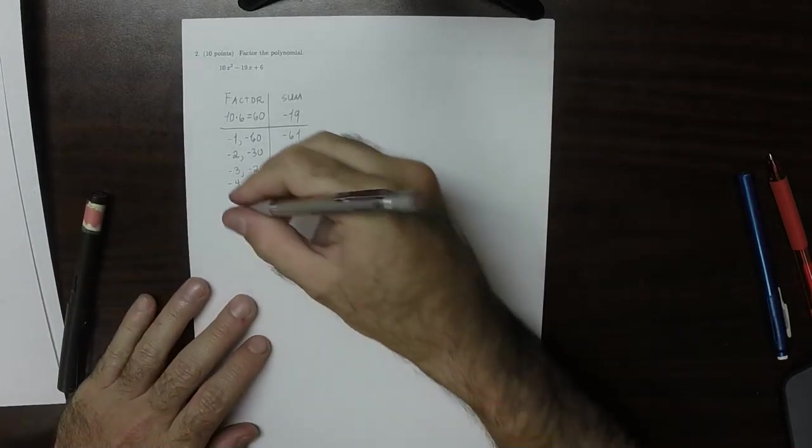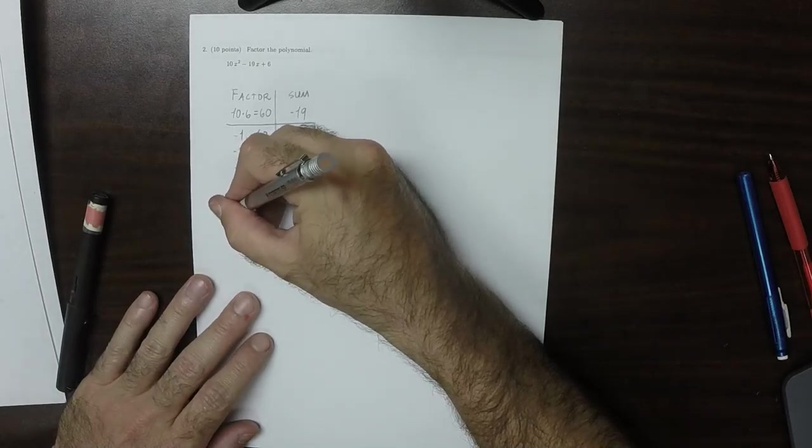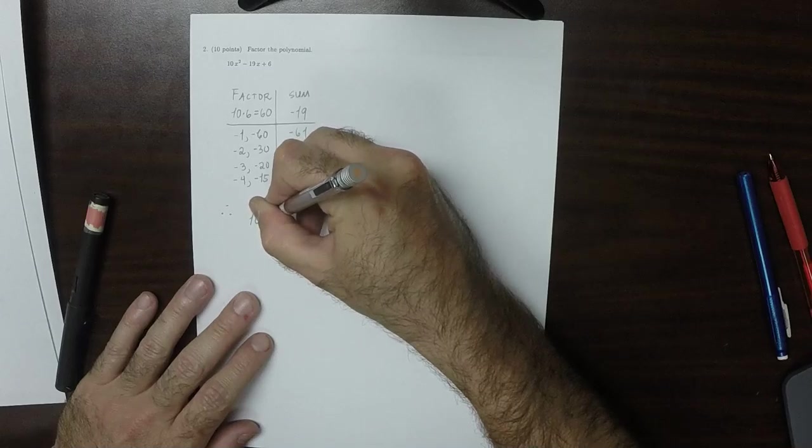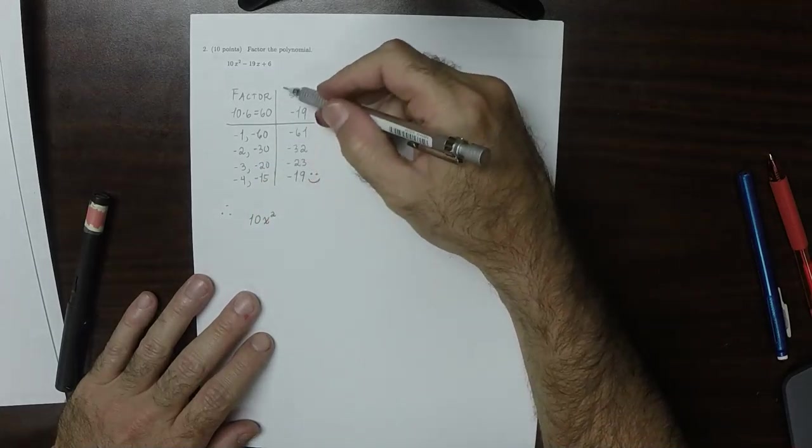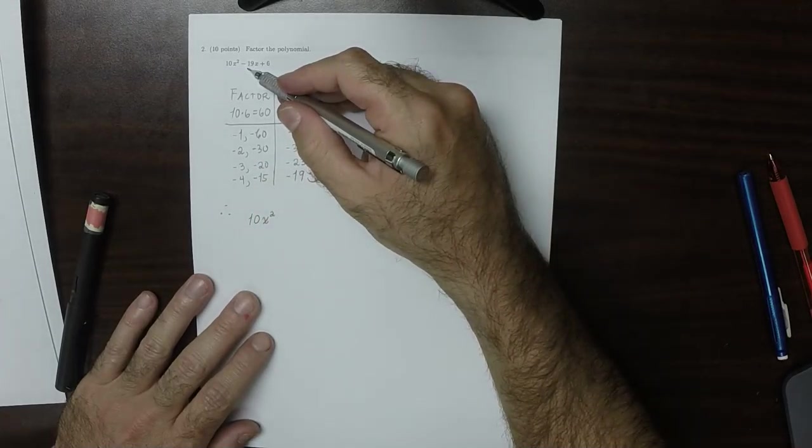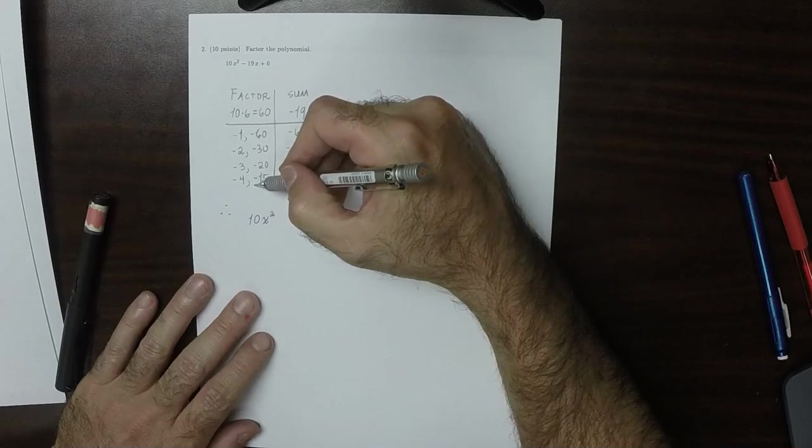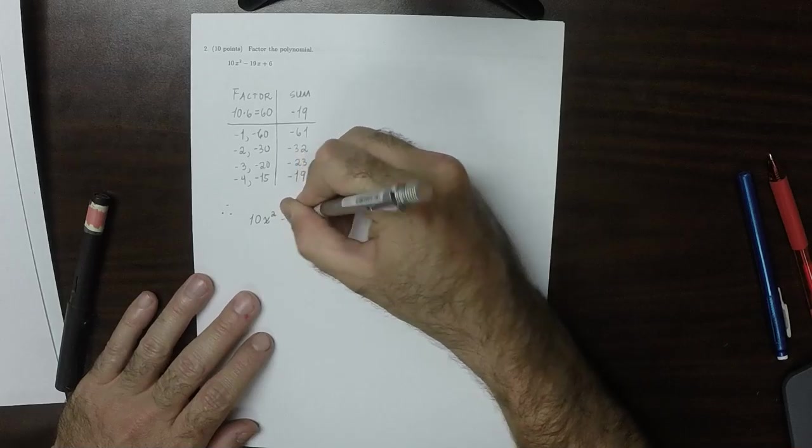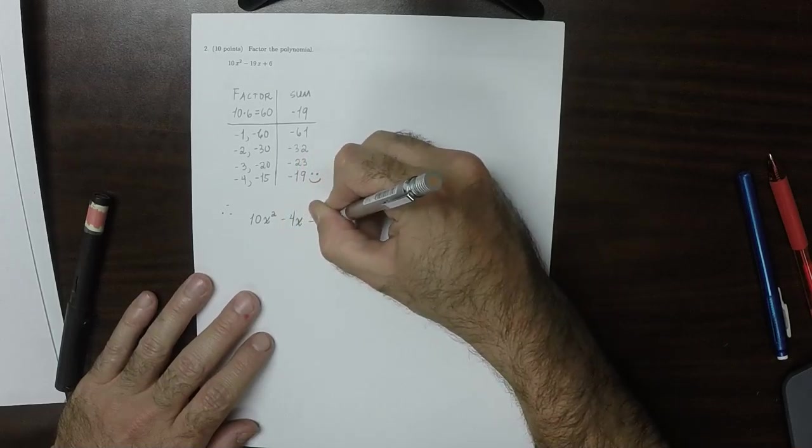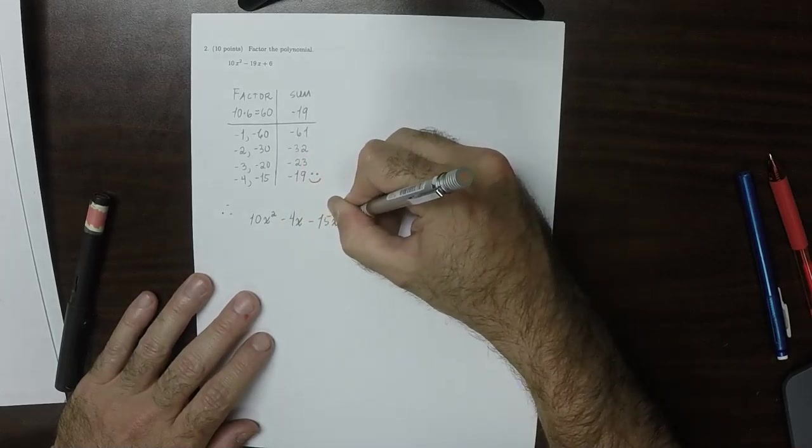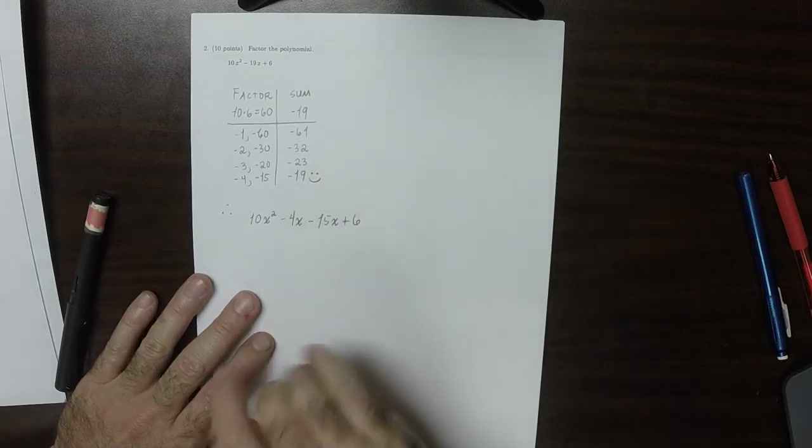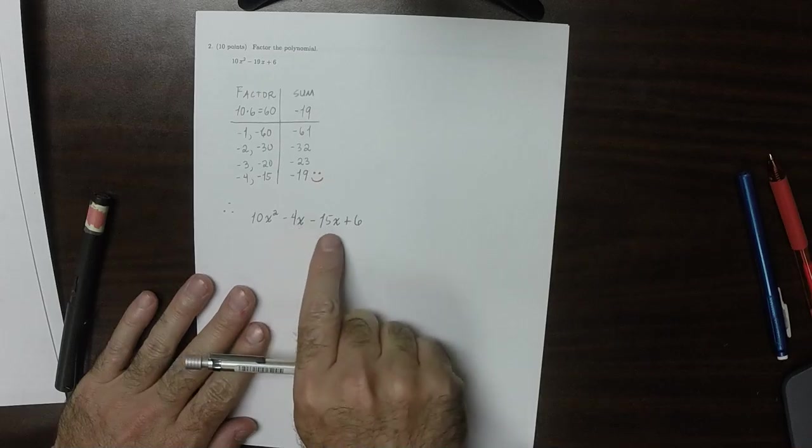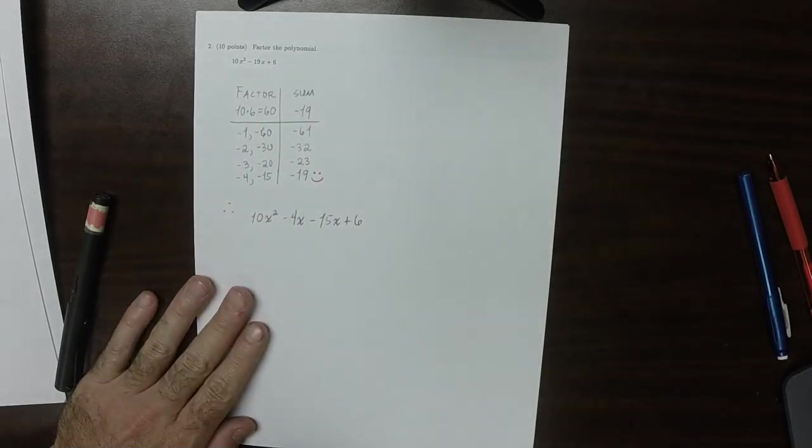So now that we've done that, we'll take this 10x squared, and the whole purpose of this table was to split this negative 19 into two pieces. So we'll say that's minus 4x, and then minus 15x plus 6. So we factored out, so this minus 4x minus 15x is that negative 19.